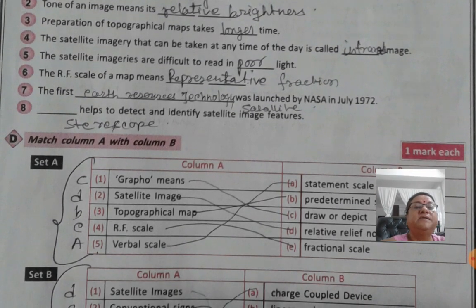The satellite imageries are difficult to read in poor light. The RF scale of a map means representative fraction. The Earth was launched by NASA in July 1972 was Earth resource technology satellite. And the dash helps to detect and identify satellites imagery features. That is stereoscope.